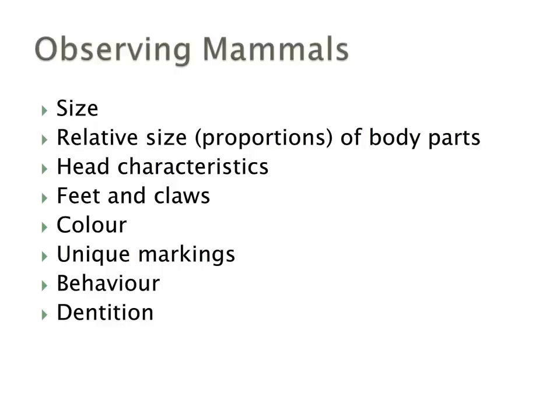When we're observing mammals, one of the things to keep in mind are the characteristics to compare across species. Size is one thing — for example, a cougar is very significantly larger than a fox. Relative size, proportion of body parts, head characteristics, feet and claws, colour, unique markings, behaviour, and dentition are all important identifiers to help narrow down species identification.